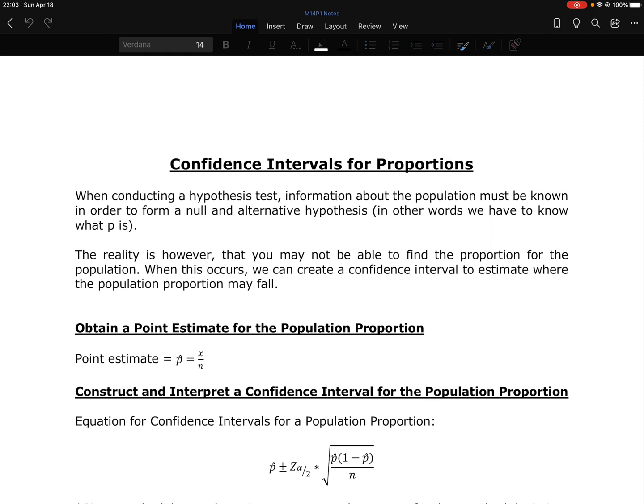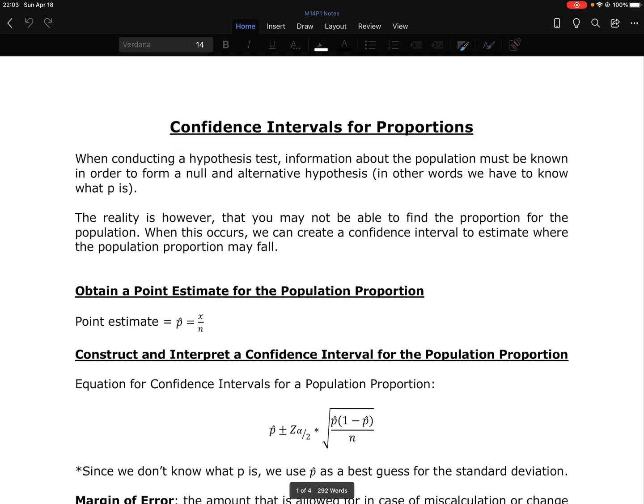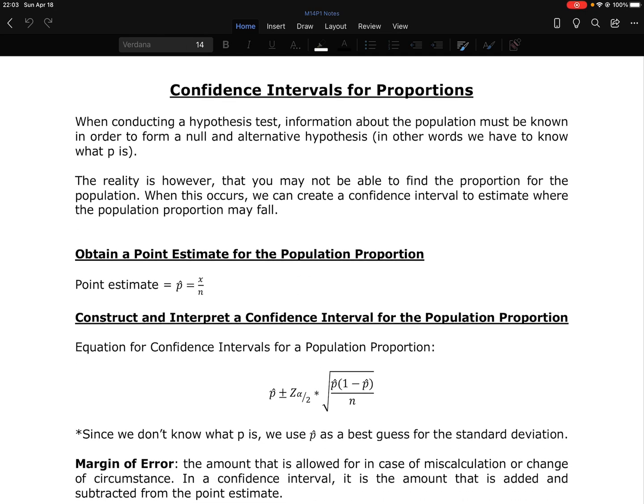However, sometimes you may not be able to find that parameter value because you're the first one doing the study. There is no prior research. There's nothing for you to compare it to. In those cases, one of the things that you can do is create a confidence interval. So we're going to look at how we can create a confidence interval when all we have is sample information.